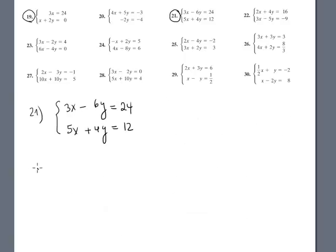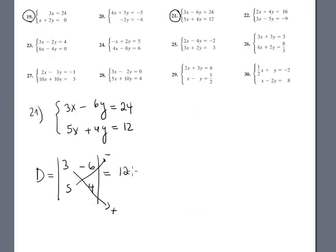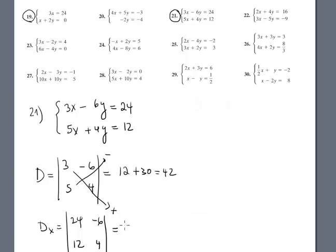Problem 21 — again solve the system using Cramer's Rule. The determinant of the system is 3, negative 6, 5, 4. Multiplication — positive and negative — this is 12 plus 30 equals 42. Dx: replace the column with 24 and 12, negative 6 and 4. 24 times 4 is 96 positive, and negative times negative is positive again, plus 72, giving Dx = 168.